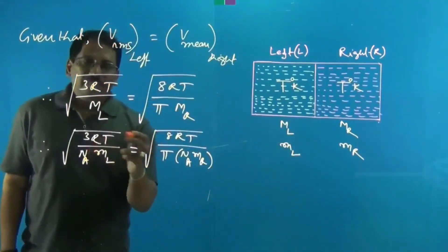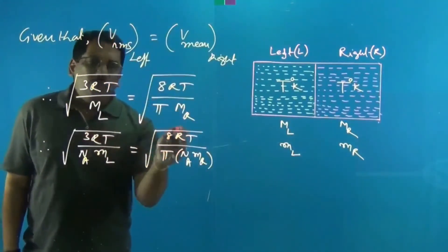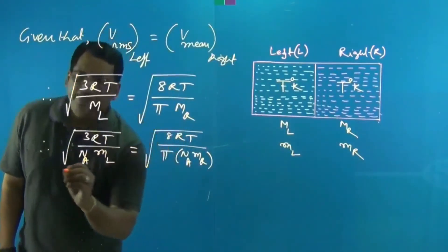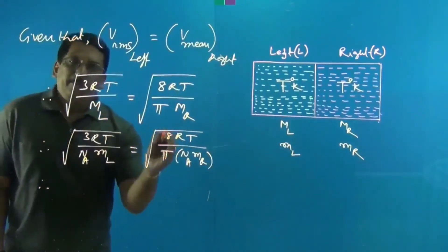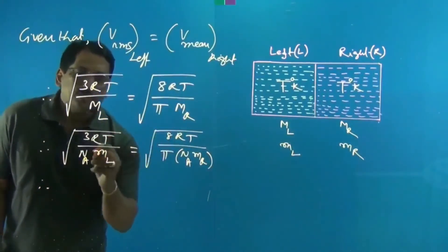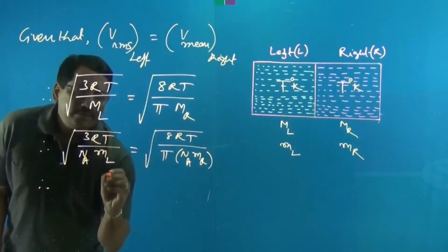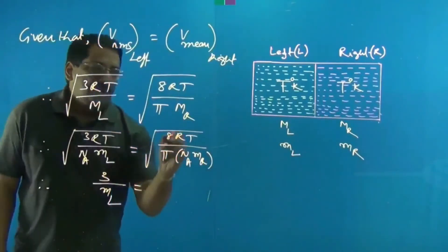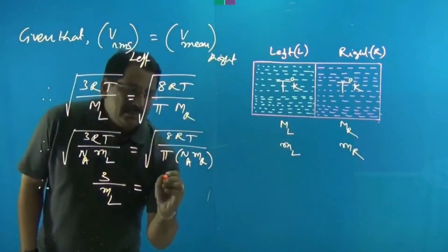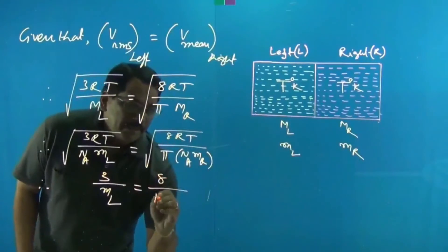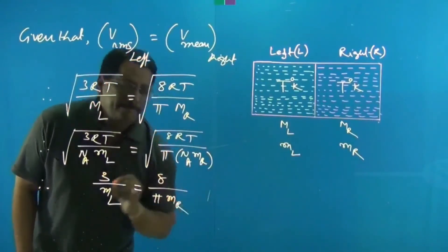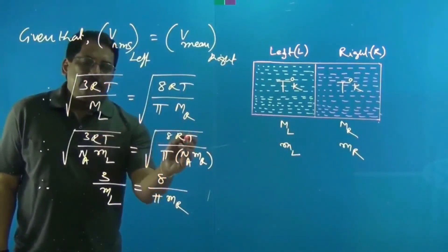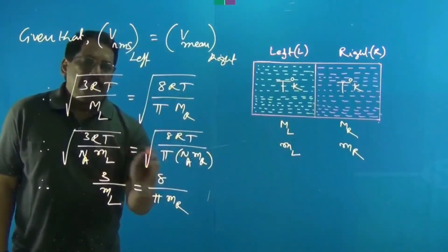On both sides under the square root, we can cancel common terms: R and T cancel from both sides, and Avogadro's number N_A also cancels from both sides. Squaring both sides removes the square roots. Therefore, the simplified expression gives us 3 / m_L on the left equals 8 / (π·m_R) on the right.